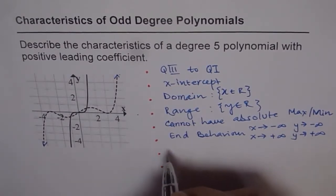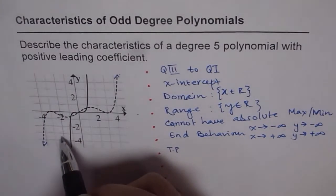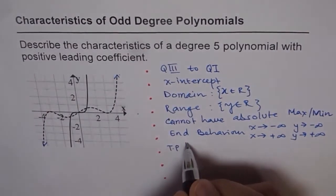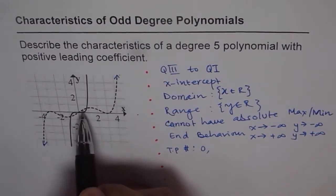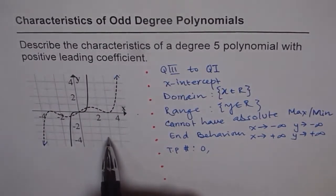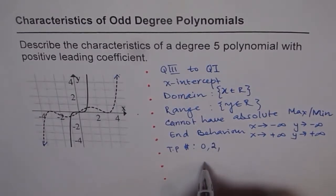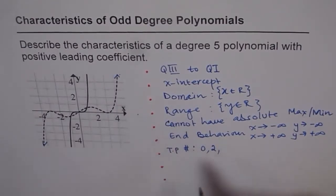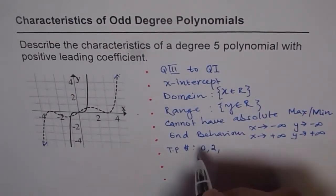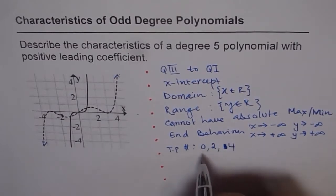Now let's talk about turning points. The graph goes from quadrant 3 to quadrant 1, and it can do so without turning at all, so the number of turning points could be 0. If it turns once it would head toward quadrant 4 and must turn again to reach quadrant 1, so it cannot have just 1 turning point — it would need 2. By the same reasoning, turning points come in pairs. For a degree 5 polynomial, the number of turning points can be 0, 2, or 4.